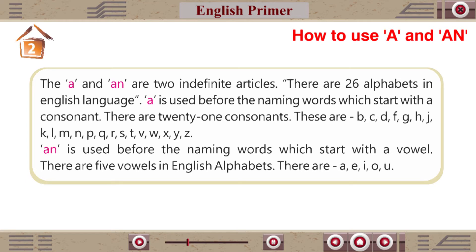Chapter 2: How to Use A and AN. A and AN are two indefinite articles. There are 26 alphabets in the English language. A is used before naming words which start with a consonant. There are 21 consonants.